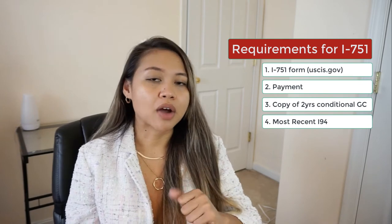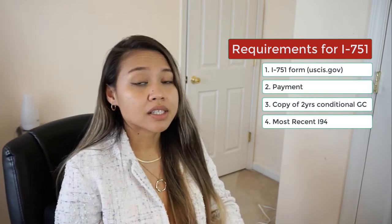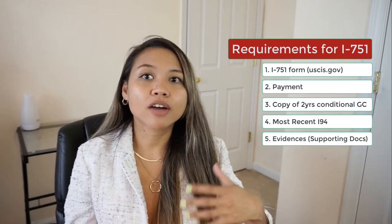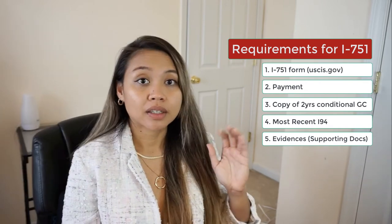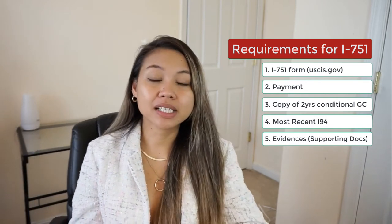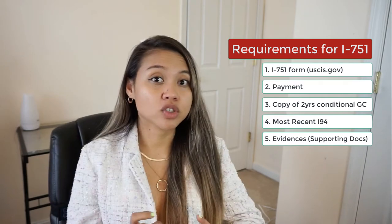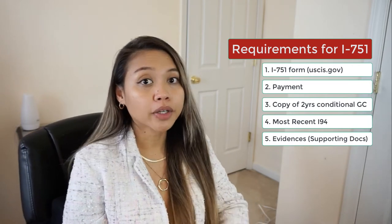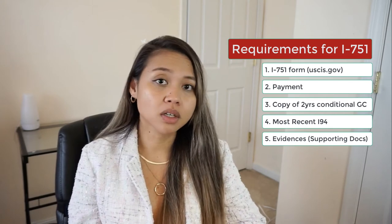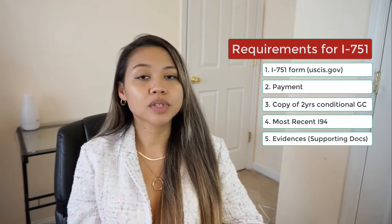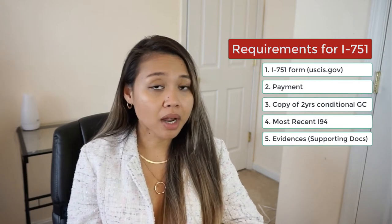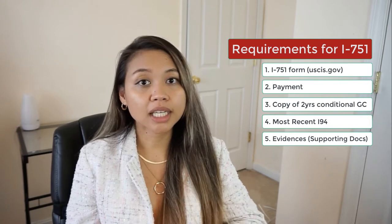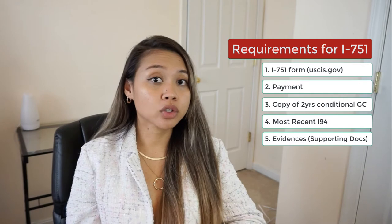Another thing is the evidence — evidence that you have a legitimate marriage. You have to gather all the evidence and information pertaining to both of you. First on my list of evidence is the marriage certificate. I also have the report of marriage. Also, the apartment lease contract that is in both of our names — the first and second apartment that we have. Also, a joint bank account and bank statement, credit card statement, checking and savings accounts that are both under your name.